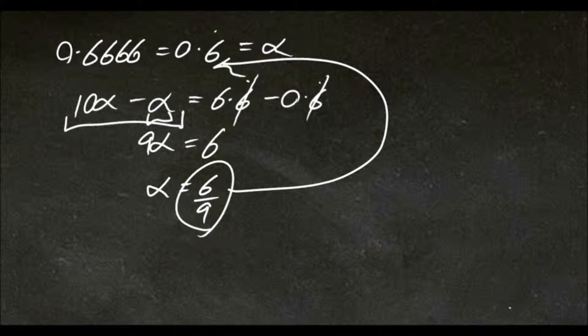We'll look at another example. We'll add 0.12 repeater. And this is like our second one, because there's two decimal places which are repeating. We'll let this equal alpha.